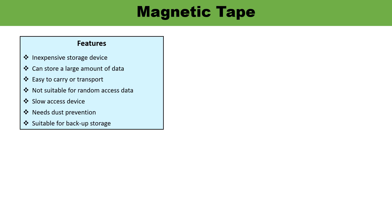Some key features of magnetic tape: it is low cost and can store a large amount of data. It is easy to carry for transportation. It is not suitable for random access since it is a serial access type storage that moves and is accessed sequentially. It is a slow access device, must be kept away from dust, and is suitable for backup storage.